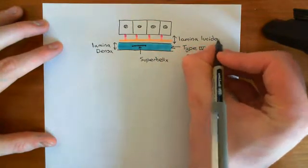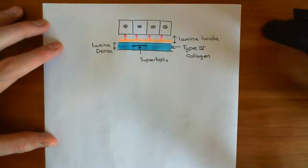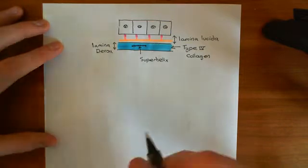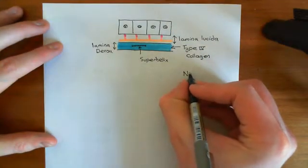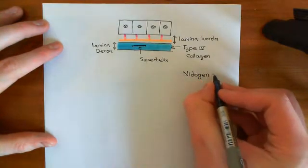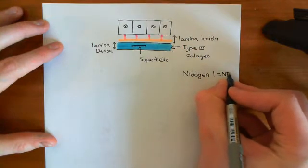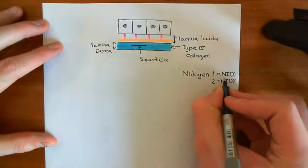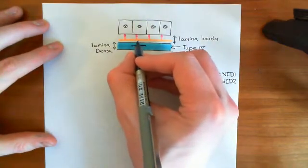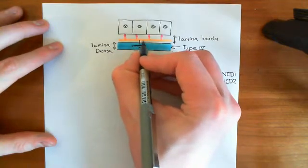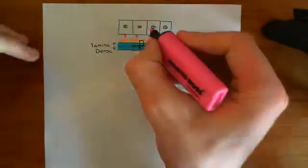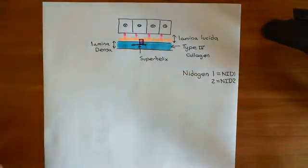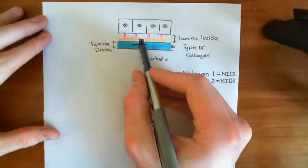There are many different ways to attach the type 4 collagen molecules to the laminins of the lamina lucida, but the one I'm going to discuss is the nidogen proteins. In humans, we have two nidogen proteins known as nidogen 1 (NID1) and nidogen 2 (NID2). The function of these nidogen proteins is to bind to the laminin heterotrimers in the lamina lucida and also to the collagen type 4 molecules in the lamina densa.